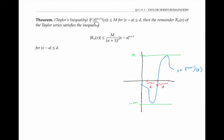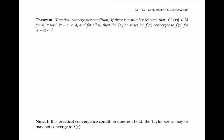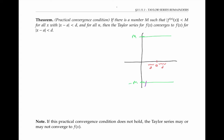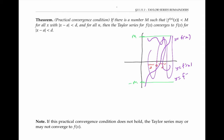In fact, if all derivatives are bounded by the same value capital M, then we can guarantee that the Taylor series converges to the function. The practical convergence condition says that if there's a number capital M such that the magnitude of the nth derivative at x is less than capital M for all numbers x in a certain interval around the center, and for all numbers n, then the Taylor series for f of x converges to f of x for x in that interval. Visually, this means that the original function, its derivative, and the second derivative all lie within this bound M — and so on for all derivatives. As long as the bound holds for all derivatives, then the Taylor series converges to the function.